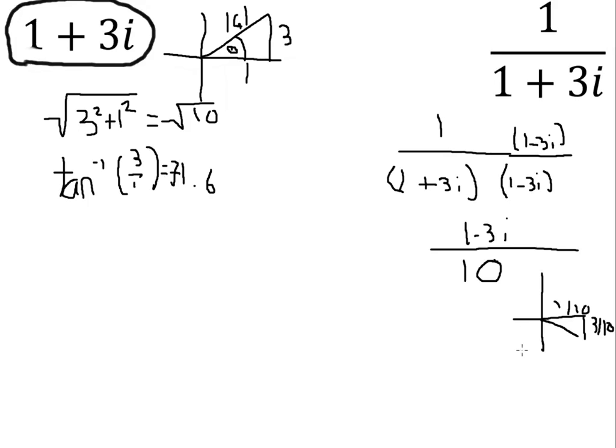So then if we want to find out the argument, it would be tan to the minus 1, 3 over 10 divided by 1 over 10. This would be exactly the same as this here, which is a different sign, minus 71.6.